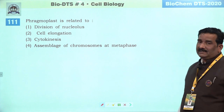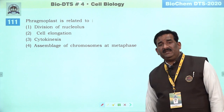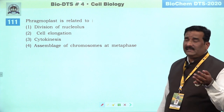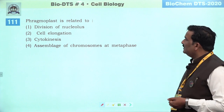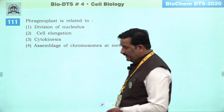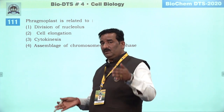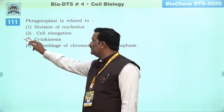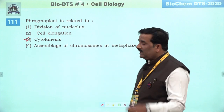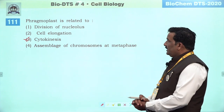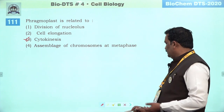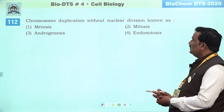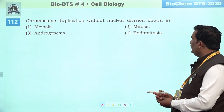Next question: phragmoplast — phragmoplast ke liye kaha jaata hai they are fragments of ER and Golgi body. They are responsible to prepare cell plate. Cell plate formation ke liye yeh responsible hain, aur obviously uske upar cell wall banti hai. Yeh process cytokinesis ke doran, khaas taur se plant mein hoti hai. Third is the right answer.